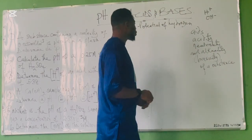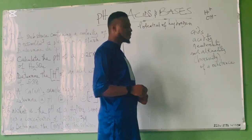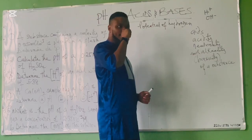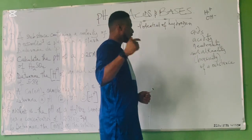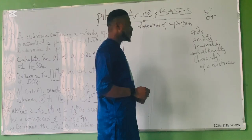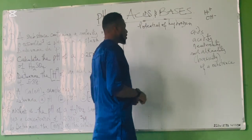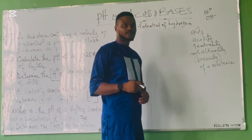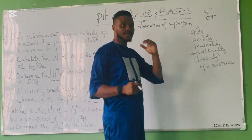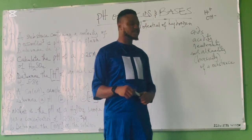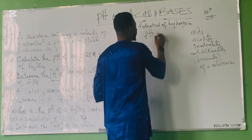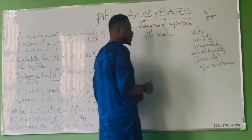It is important to actually understand all of these. It will help you to actually know what a particular pH value represents as long as that substance is concerned. Now, the scale used in determination of the pH of a substance is referred to as the pH scale.